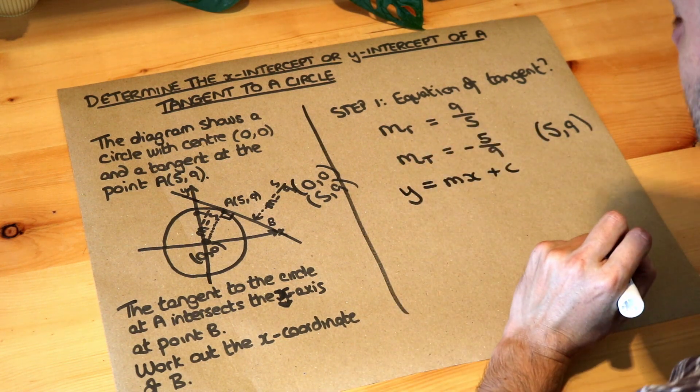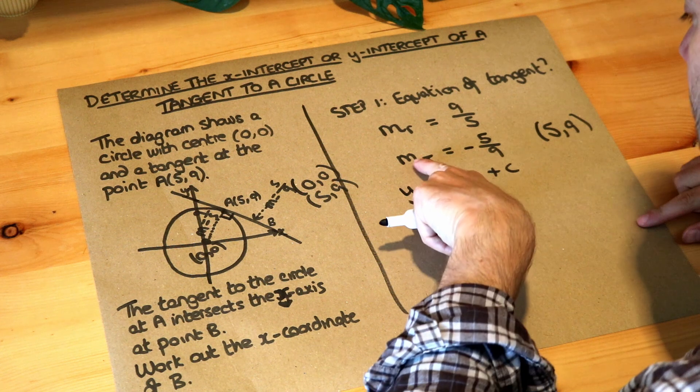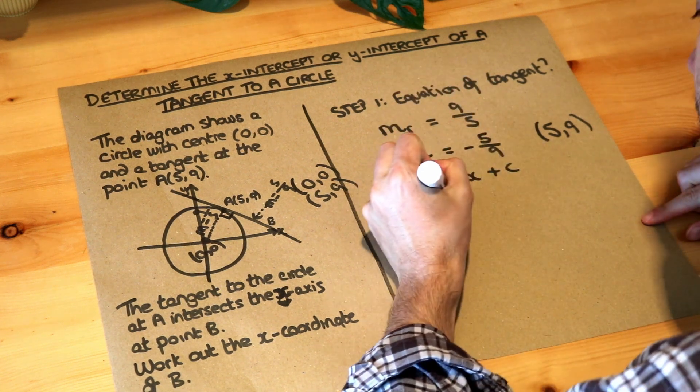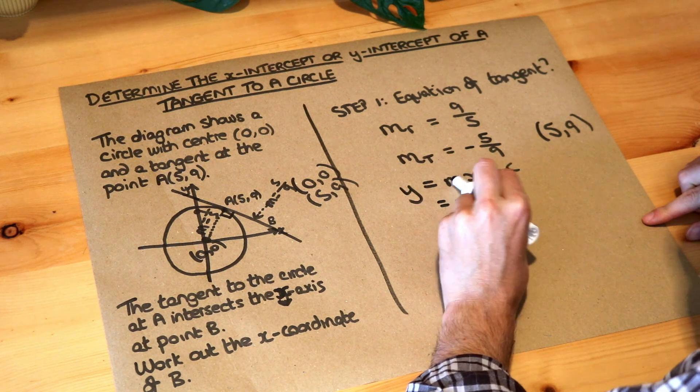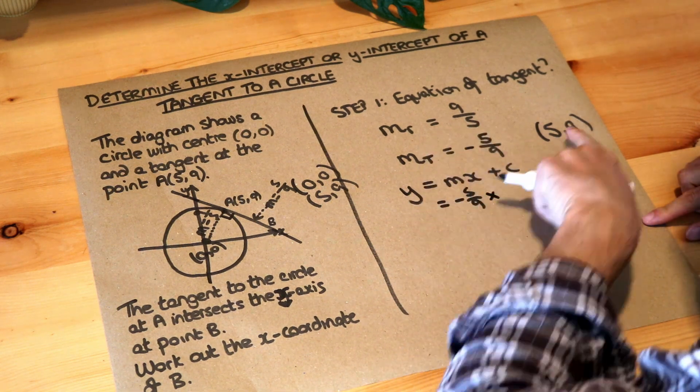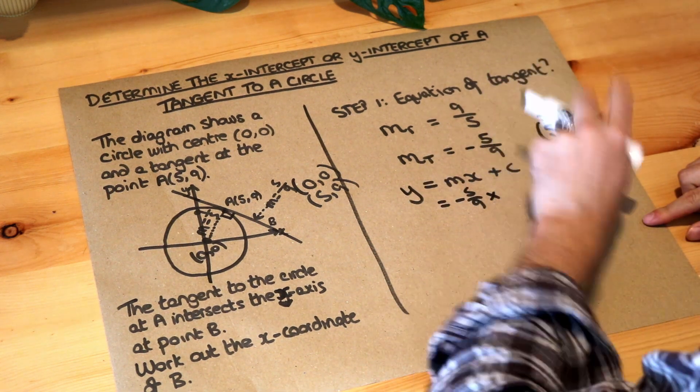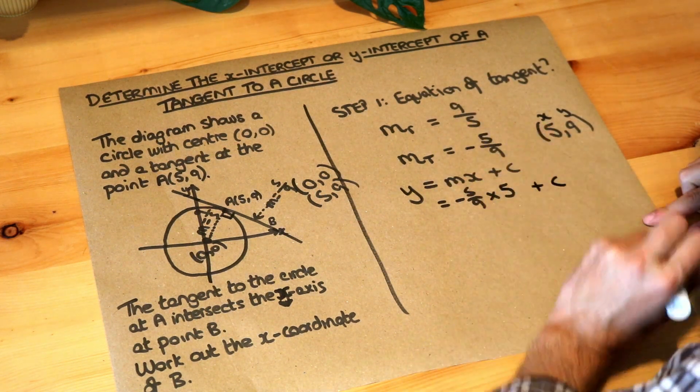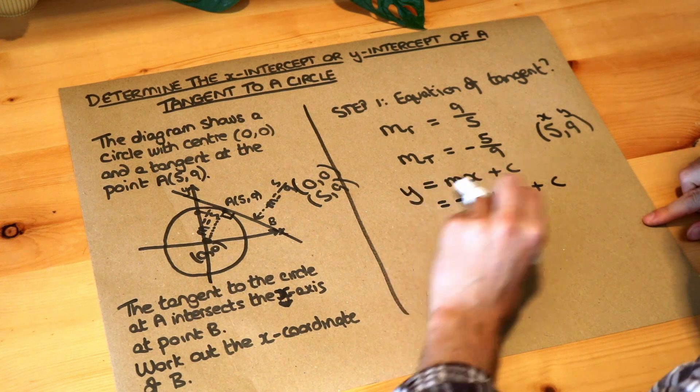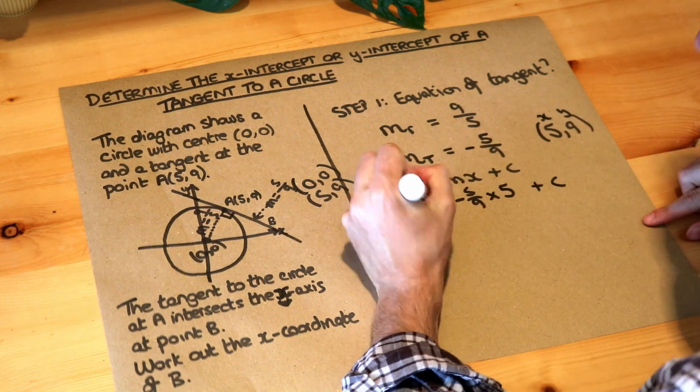But we can sub everything we know in. We know that the gradient is minus 5/9. So we've got minus 5/9. So it's mx, that means m times x, multiplied by this particular x value here, which is 5, plus the c, which is what we're trying to work out. And we also know the y at this particular point is 9. So we've substituted everything in.